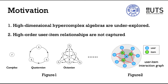Second, high-order user-item relationships are not captured. Recent studies on adopting graph convolutional technology in recommendation have shown the importance of modeling high-order user-item relations. Nevertheless, most hypercomplex recommenders exploit variants of the matrix factorization framework, which ignores such high-order user-item information.